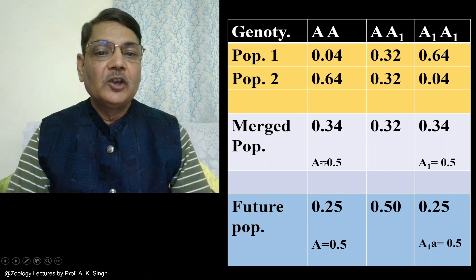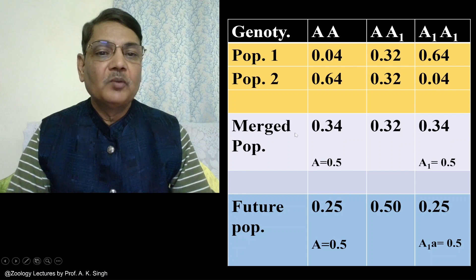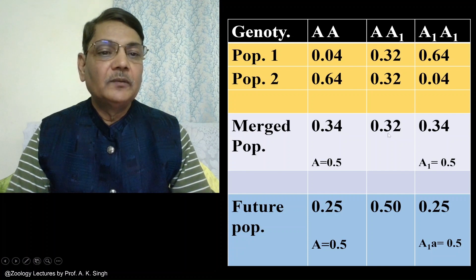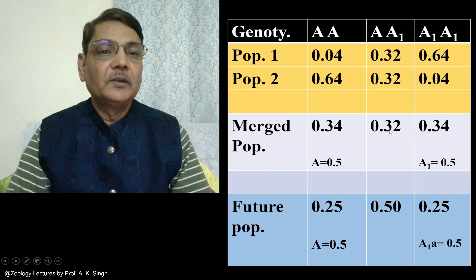When you calculate the allele frequencies, they will come to 0.5 and 0.5 respectively — meaning both alleles will have equal frequency. This is because 0.34 added with half the frequency of the heterozygote, that is 0.16, gives 0.5. Likewise, 0.34 for A1A1 plus half the frequency of the heterozygote also gives 0.5.